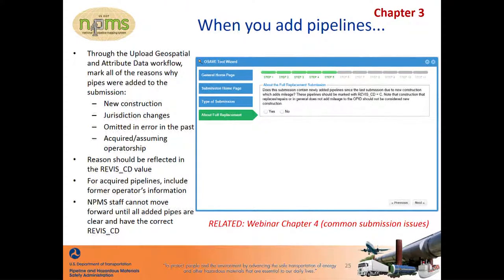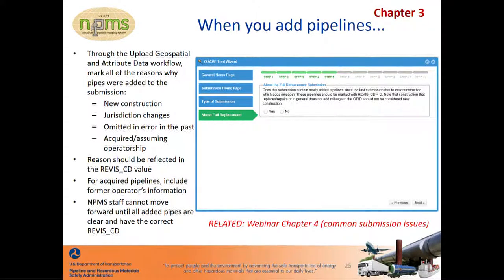When pipelines are acquired from more than one operator, please be clear about which pipelines relate to which former operator. If you are uncertain what already exists in the NPMS for that OPID, you can use the OSAVE map viewer to review the data, or you can submit a request to receive an export of the data currently in the NPMS for your OPID. If during the review we identify pipelines that are newly added but do not have revision code C, J, or A, we will reach out to you for clarification and possibly resubmission. We must have a clear understanding of the changes that have occurred in the pipelines before we are able to move forward with the review.